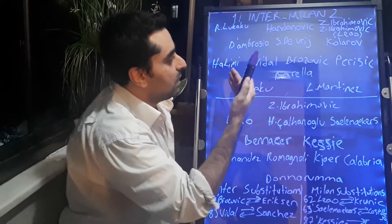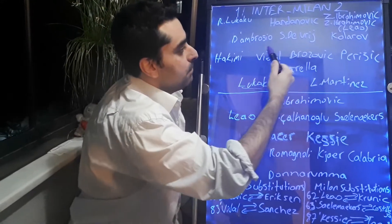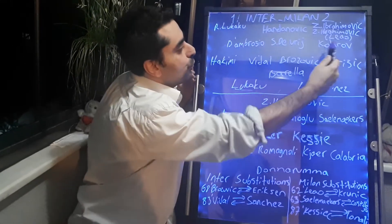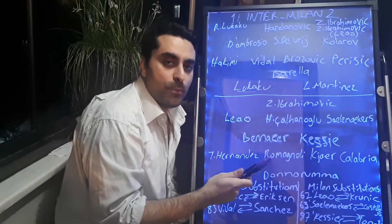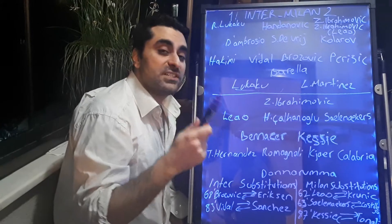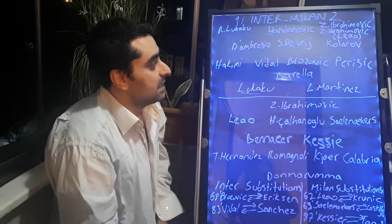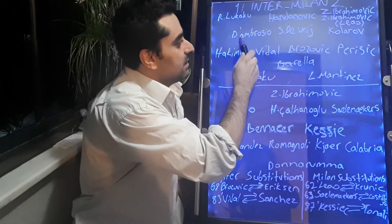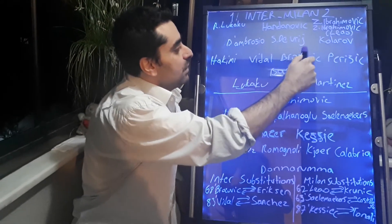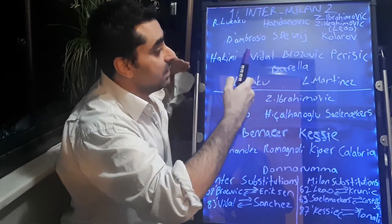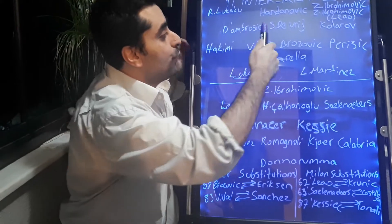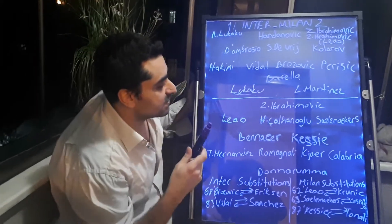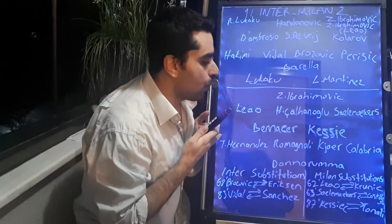I want to highlight Inter's defense. There were so many empty spaces behind the Inter defense every game. They conceded three goals from Fiorentina and two goals from Benevento. Inter's defense has a problem. Yes, they have many absent players, but they still have a problem. Rival players keep finding positions behind the Inter defense in every game. They have to solve this problem.